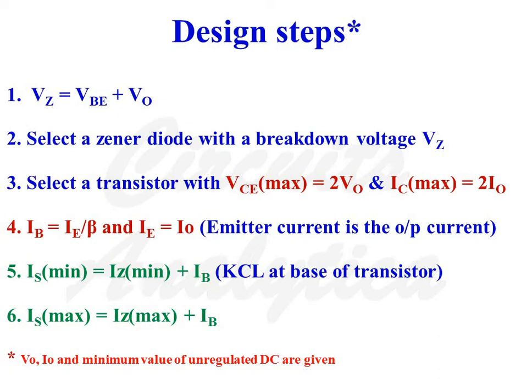VZ is equal to VBE plus V0. First, select a Zener diode with a breakdown voltage of VZ. Second, select a transistor with VCmax equal to 2·V0 and ICmax equal to 2·I0.